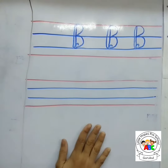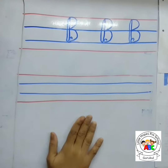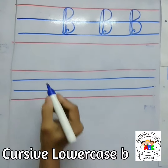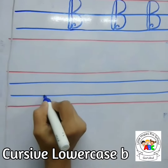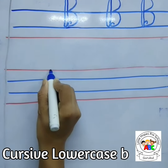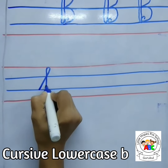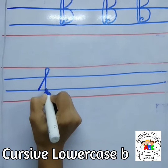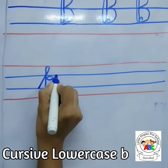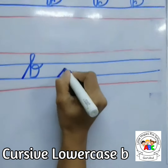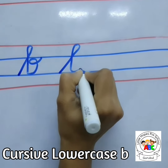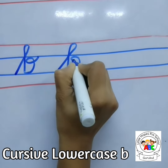Now we are going to write small b, cursive small b. For writing small b, we have to start from the second blue line. We are going to put one slanting line up till the red line, then come down again and then we are going to write b. A slanting line, come down again to the second blue line and then a curve.